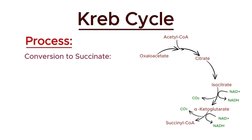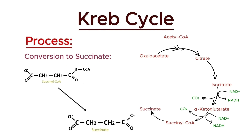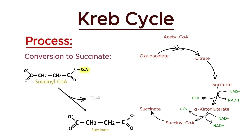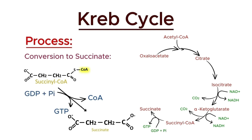In the fifth step of the Krebs cycle, succinyl-CoA is converted into succinate. This reaction is catalyzed by the enzyme succinyl-CoA synthetase. During this step, the CoA group is released from succinyl-CoA, and this release provides the energy needed to synthesize a molecule of guanosine triphosphate, GTP, from guanosine diphosphate and inorganic phosphate. In some cells, GTP is then used to produce ATP. This step is significant because it directly produces a molecule of GTP or ATP, which is used as an energy source by the cell.